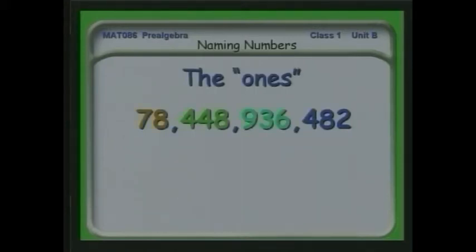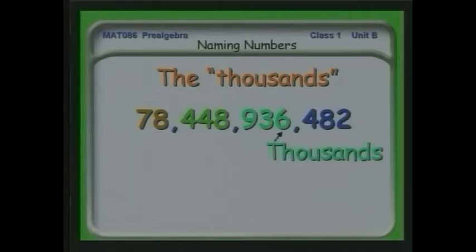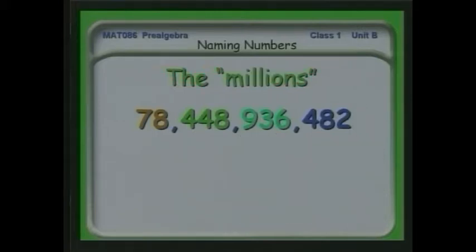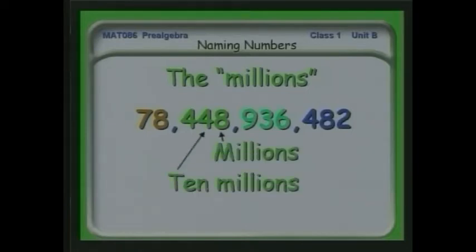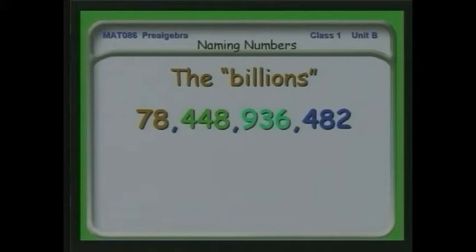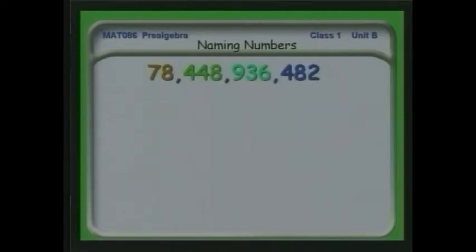So we have two ones, eight tens, four one hundreds — those are the ones. Then we move up into the thousands: six thousand, three ten thousands, nine hundred thousands. From the thousands we move up into the millions: eight million, four ten millions, four hundred millions. Now we're getting up into what economists call the real numbers: eight billions and seven ten billions.